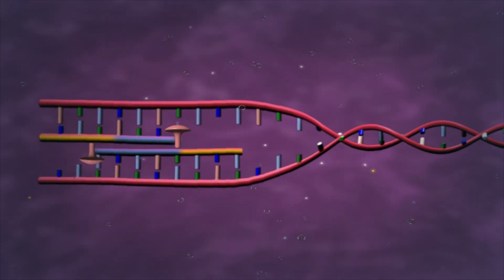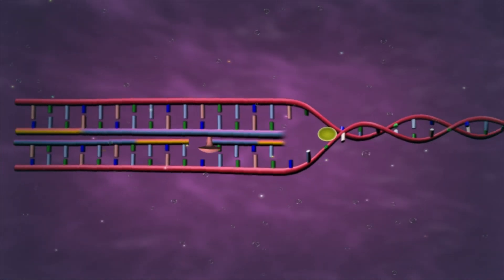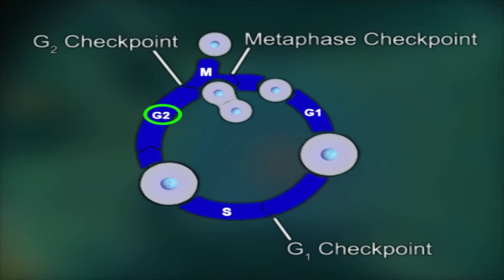The S or synthesis phase where the DNA replicates, and G2 or GAP2 phase where the cytoplasmic contents assemble to start the cell division.